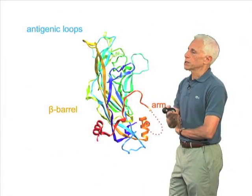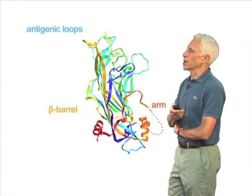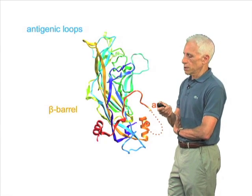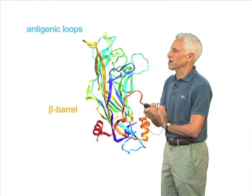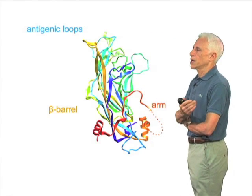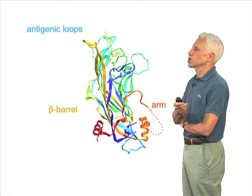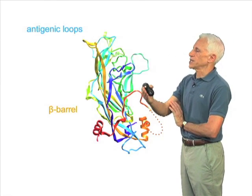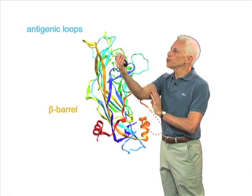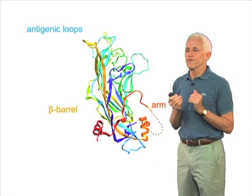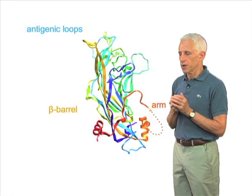Now, this subunit — the L1 subunit — is also based on the same sort of beta jelly roll building block that we saw in the positive-strand RNA viruses that we were just talking about. And it's elaborated by various loops that vary from virus type to virus type.